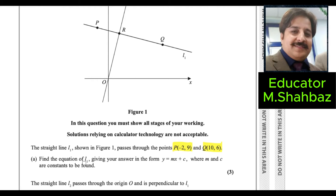To find the equation of line L1, you must first find the gradient. Whenever you want to find the equation of a tangent, normal, or line, you need to find the gradient of that line. Since this line passes through points P and Q, you can find the gradient using the formula: m = (y2 - y1) / (x2 - x1).